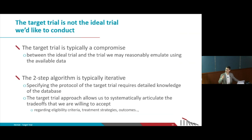The specification and emulation of the target trial is typically an iterative process. We propose the target trial, look at the data, see what is possible and what is not. We may propose a target trial with three arms, then look at the data and find that one treatment is not used, and have to go back and change our target trial to have only two arms — or look for a different database if we really needed three arms.